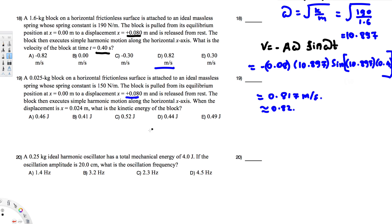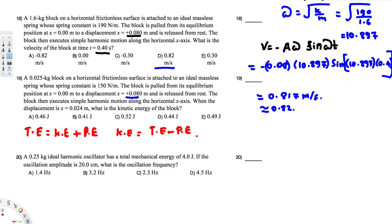We can use the energy equation here. Total mechanical energy equals kinetic energy plus potential energy. The question asks for kinetic energy, so we rearrange: KE = total energy − potential energy. Total energy is given by ½kA² (where A is amplitude), and potential energy is ½kx² (where x is displacement).